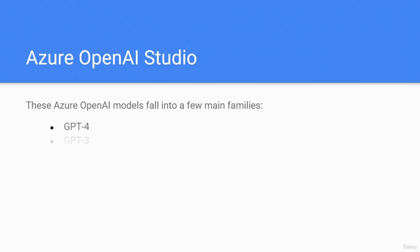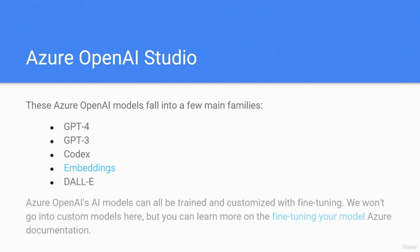These Azure OpenAI models fall into a few main families: GPT-4, GPT-3, Codex, Embeddings, and DALL-E. Azure OpenAI models can all be trained and customized with fine tuning. You can learn more about that on the fine-tuning Azure documentation.